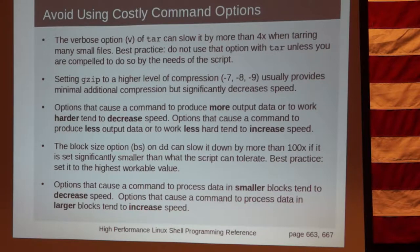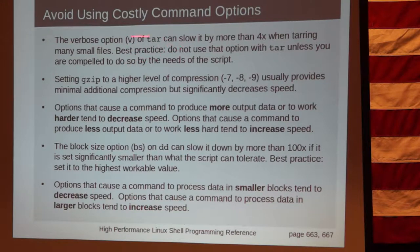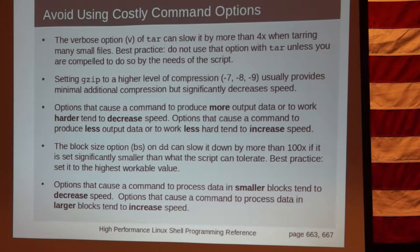There are certain options you need to be careful of. These are the ones that I know of that are the biggest offenders. The verbose option on tar — I've seen it slow stuff down a lot more than four times. If you're dealing with a lot of small files and you're displaying the path of the file as you're tarring it up, you can see more like a ten times difference between verbose and non-verbose.